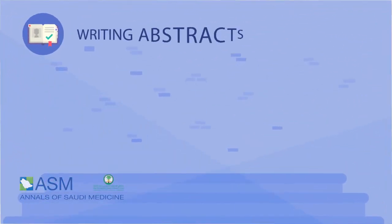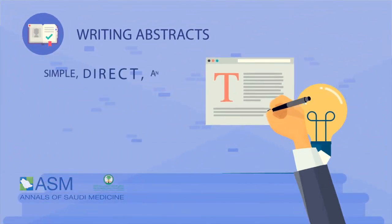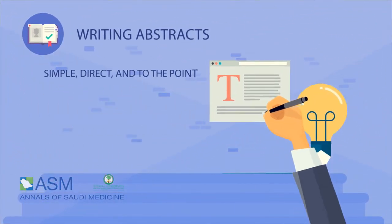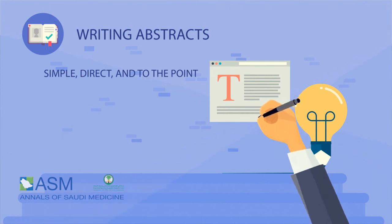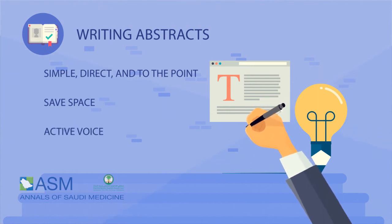In writing abstracts, keep sentences simple, direct, and to the point. Make sure each word is necessary to save space. Use active voice whenever possible instead of passive voice.